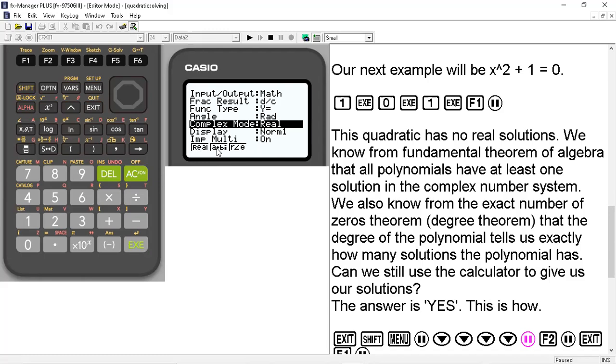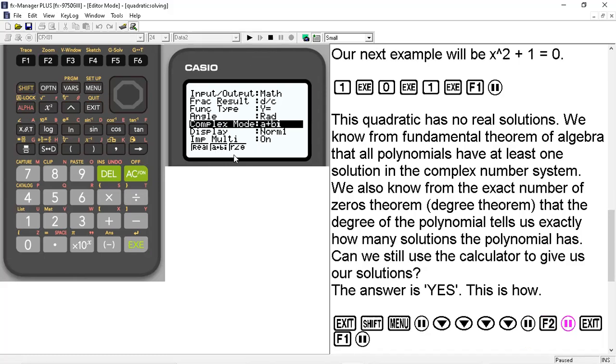This R angle θ, this is the polar form of complex numbers. And this you would use if you are dealing with trigonometry combined with complex numbers. This is usually done in a trigonometry or a pre-calculus with trigonometry class. So we're going to change it to the A + Bi mode in the rectangular form of complex numbers. Then we'll go ahead and exit.